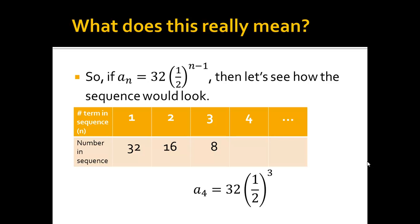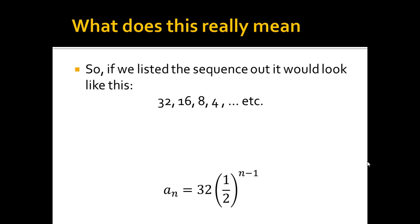And I continue to do the same thing with the third term, and I get 4, so the fourth term is 4. So if we listed out the sequence, we'd have 32, 16, 8, 4, etc., and basically what I'm seeing here is I'm dividing by 2 every time, which means I'm multiplying by 1 half, that's where that comes from.